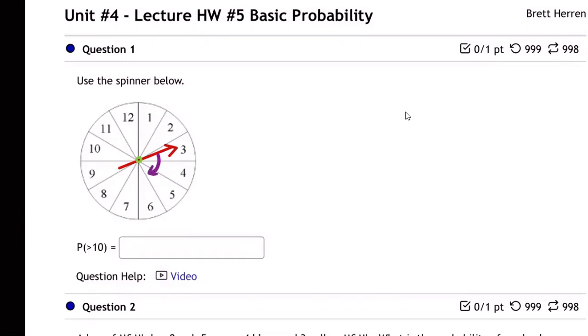And they're saying down here, mine anyway, says probability greater than 10. So what that means is, what's the probability that the number it lands on is greater than 10, which means